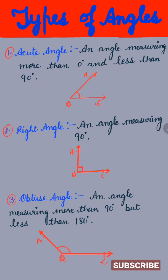The second one is right angle: an angle measuring 90 degrees is called a right angle. The third one is obtuse angle: an angle measuring more than 90 degrees but less than 180 degrees is called an obtuse angle.